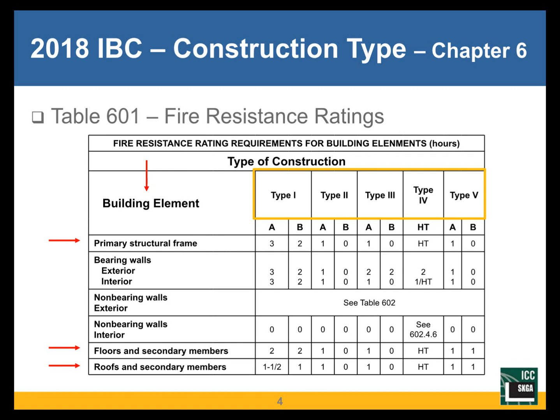I want to make a distinction for purposes of applying the building code: it uses the term 'primary structural frame,' and then you'll notice arrows pointing to floors and secondary members, and roofs and secondary members. The fire resistance ratings for the primary structural frame — especially in Type 1 and Type 2 construction — are going to be different. They're more robust for Type 1A construction versus Type 1B construction. So you need to be conscious of what structural element you're dealing with when deciding fire resistance ratings, as it can vary depending on whether it's the structural frame or the secondary members.